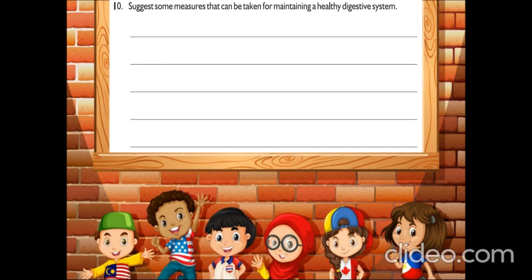Suggest some measures that can be taken for maintaining a healthy digestive system. We have to eat at regular intervals of time. We must eat slowly and chew the food properly. We have to drink a lot of liquid like water and juices. We must add fruits, vegetables, cereals and pulses in our daily diet. And most importantly, we must avoid junk food and excessive intake of tea and coffee. By following these measures, we can have a healthy digestive system.